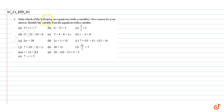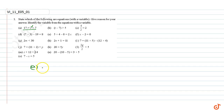In this question, state which of the following are equations with a variable, give reasons for your answer, and identify the variable from the equation with a variable. Part a: this is an equation with a variable x, so the variable is x. Part b: this is an inequality.